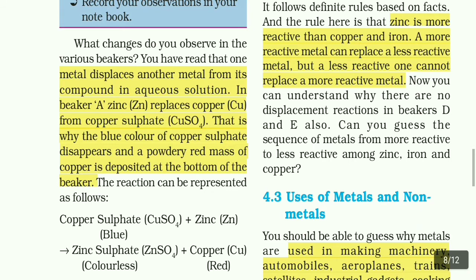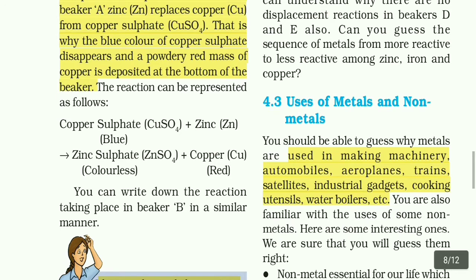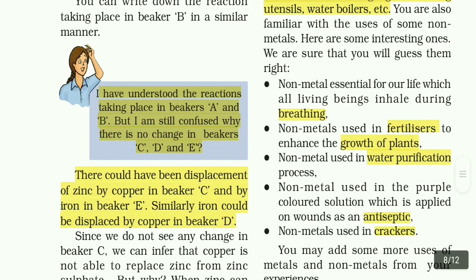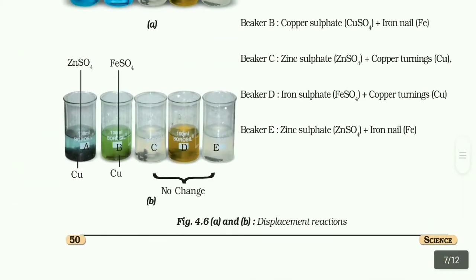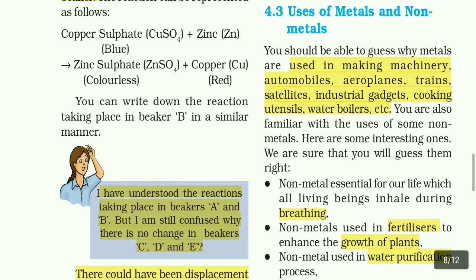The reaction can be represented as follows: copper sulphate (CuSO₄) + zinc (Zn) → zinc sulphate (ZnSO₄) + copper (Cu). Copper sulphate is blue in colour; zinc sulphate is colourless, and copper is red in colour. Now let's understand the reactions taking place in beaker B.